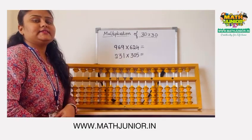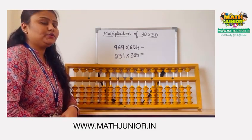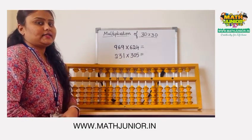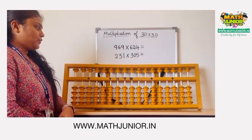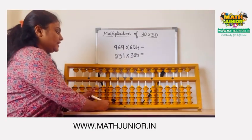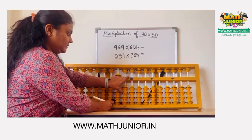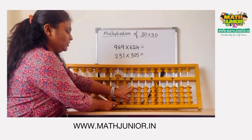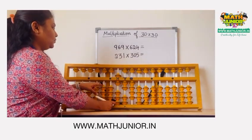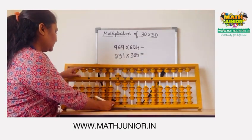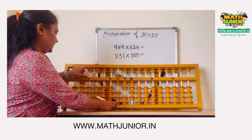The first question is 969 into 624. First we have to place 624 using 110 and no need to place. Then skip two rods and place 969.